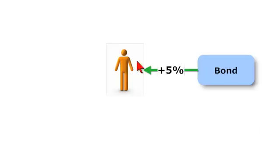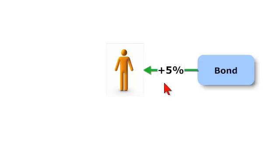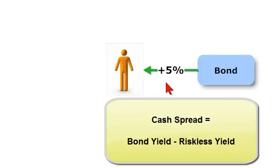This is David of Bionic Turtle with a quick look at the CDS basis trade. We start by assuming an investor who takes a long position in a bond — this is the cash market. The investor buys the bond, and I'm assuming the cash spread is 5%. By spread, I mean the yield above the riskless rate, like a U.S. Treasury. That's compensation because the investor is assuming the risk of default on the bond — that's the credit risk.